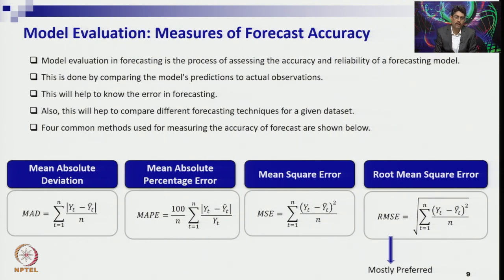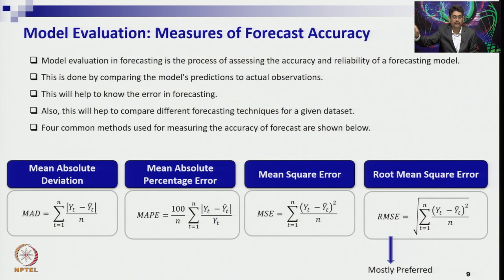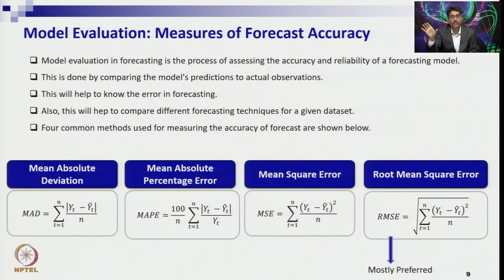Similarly, in time series data, when you have past data, understand the pattern, and have selected a model and made a forecast — that forecast alone is not sufficient. Just like mean and standard deviation, you need to calculate the measure of accuracy: how much deviation exists between your data and your predictions. That is called the measure of forecast accuracy.